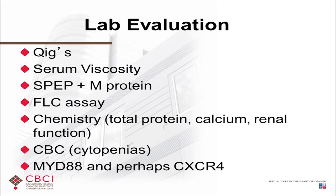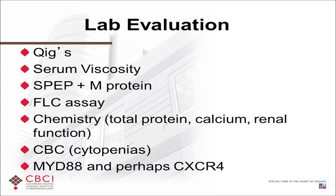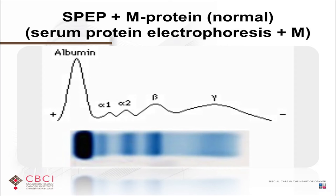We also check a blood chemistry, which measures kidney function, liver function, and electrolytes. There's also a total protein test — a rudimentary way of measuring the IgM protein on a bigger scale. Then the quantitative immunoglobulin test measures the absolute numbers of IgA, IgM, and IgG. Remember, we all make these immunoglobulins — they're a normal part of the immune system. When looking at the absolute number, you're measuring both normal immunoglobulins and the clonal immunoglobulins made by the WM cells.